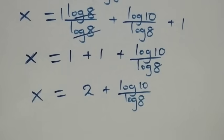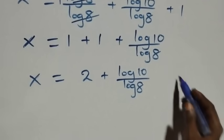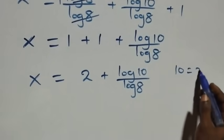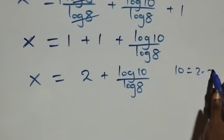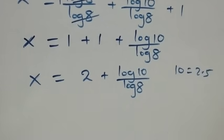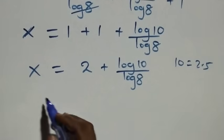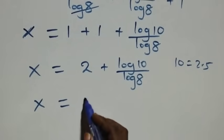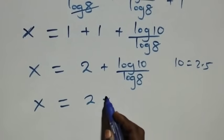Also here we can express 10 as 2 times 5, which implies x equals to 2 plus log of 2 times 5 over log 8.